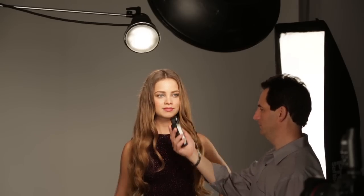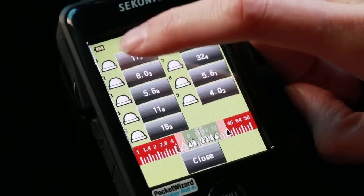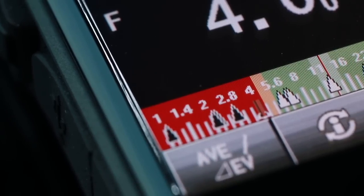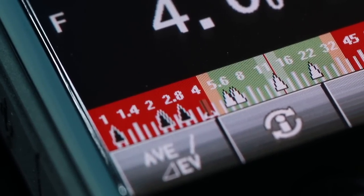Take a mid-tone reading, then meter the entire scene, store up to 9 readings in the memory, and compare them on the analog scale to make sure they are in the dynamic range of your camera.